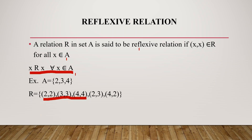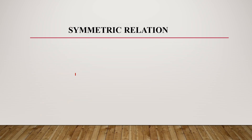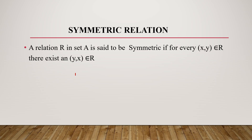Moving on to the next relation: symmetric relation. A relation R in set A is said to be symmetric if for every (x, y) element R, there exists (y, x) element R.